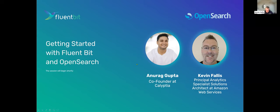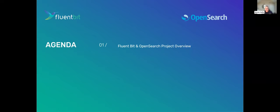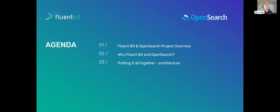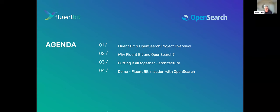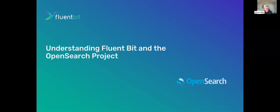Let's go through the agenda. First, we're going to talk about FluentBit and the OpenSearch project. Next, why FluentBit works well with OpenSearch. Then we'll put it all together — I have a sample Movie Geeks application built on Kubernetes. We'll set up FluentBit to monitor logs and visualize them in OpenSearch dashboards. After that, we'll do the demo showing FluentBit in action with OpenSearch, and finally open for questions.